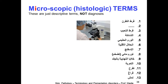After finishing the macroscopic terms, we now come to the microscopic or histologic terms. These terms are also very important and you have to read them many times so that you can recognize them. The microscopic terms, same as the macroscopic terms, are not diagnoses — they are just descriptive terms.